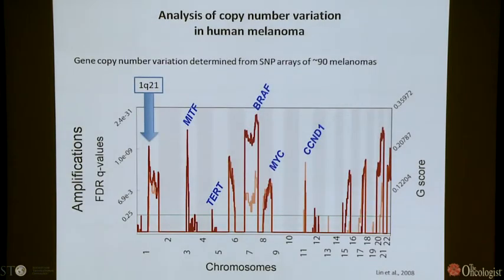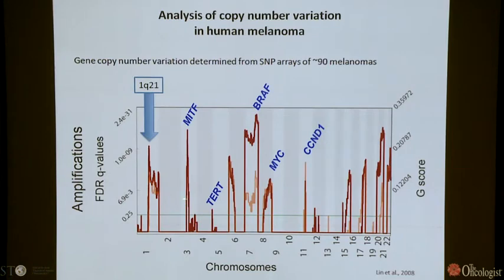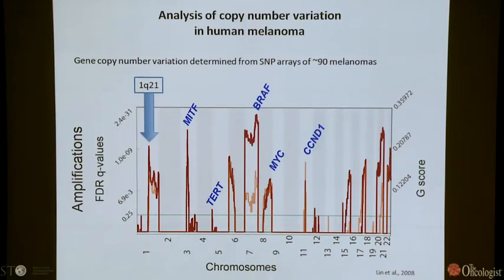They began a collaboration with Levi Garroway's lab at the Broad and Dana-Farber, where they looked at amplifications and deletions across a panel of about 90 short-term melanoma cultures. There were commonly well-known amplified genes such as MITF, BRAF, and cyclin D1. But there was a region on 1q21 that they chose to focus on because there were no known or obvious oncogenes in this region, and yet it was highly amplified in this set of melanomas.